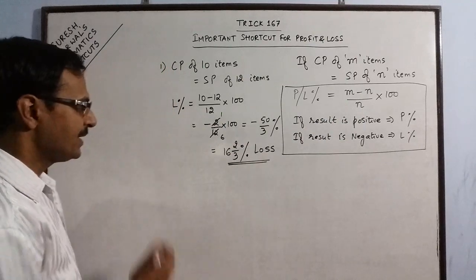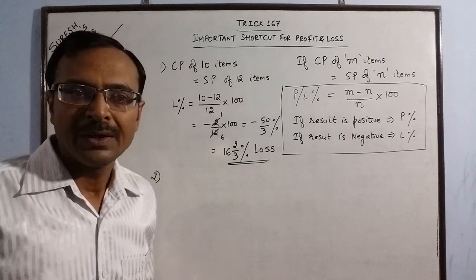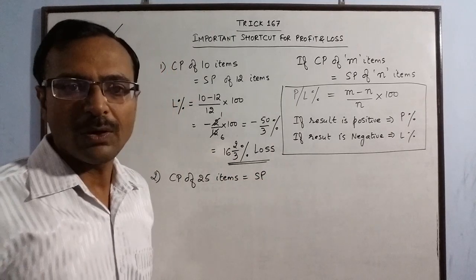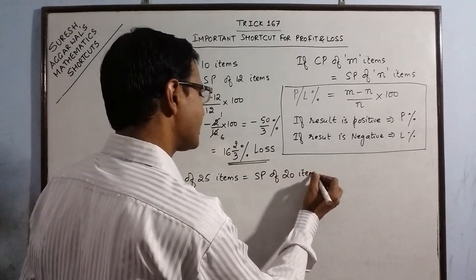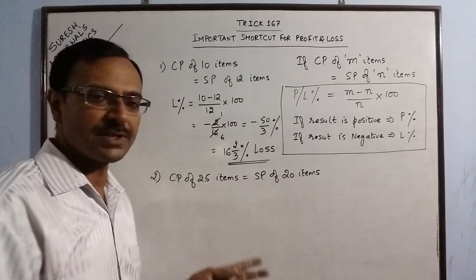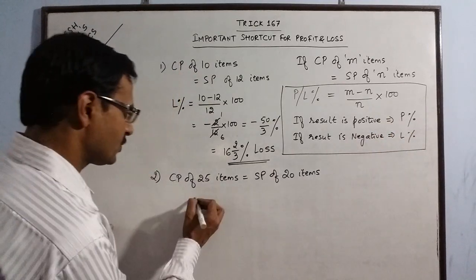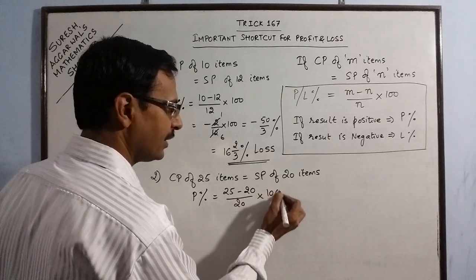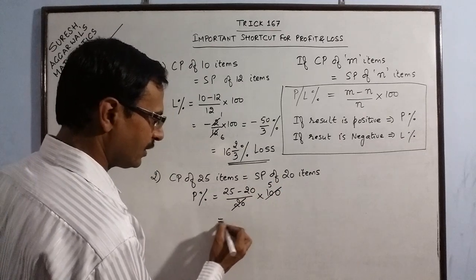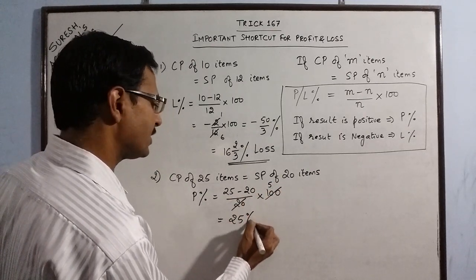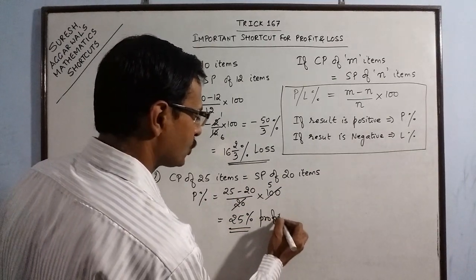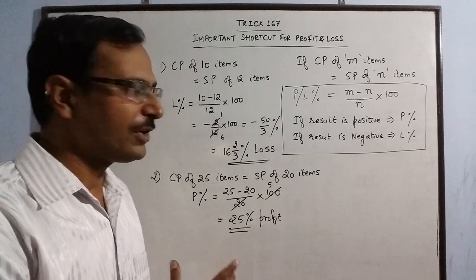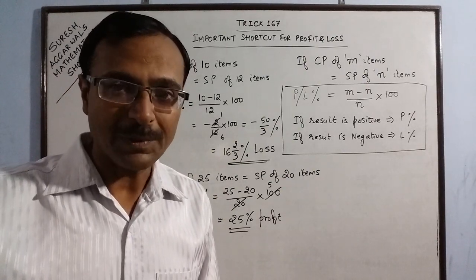One more example: CP of 25 items equals SP of 20 items. Here m = 25 is greater than n = 20, so m minus n is positive, meaning we have profit. Profit percent = (25 − 20) / 20 × 100 = 5/20 × 100 = 25 percent profit. Through this shortcut, this type of problem can be solved in 3 seconds. Keep learning these shortcuts for success in competitive exams — like, share, and subscribe to the channel.